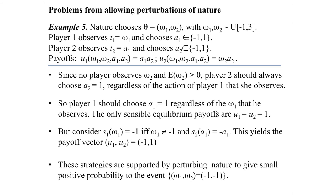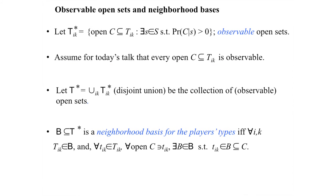Let me go on and tell you what we do do — the solution we're going to offer. Type spaces have topologies, so we'll talk about observable open events. An information set for you is a single type. We look at open sets of types and say an open set is observable if there's a strategy profile such that that open set of types for you has positive probability.